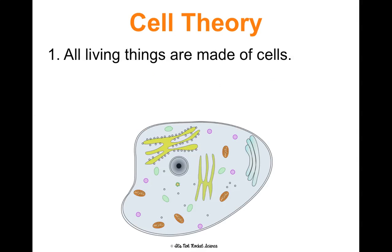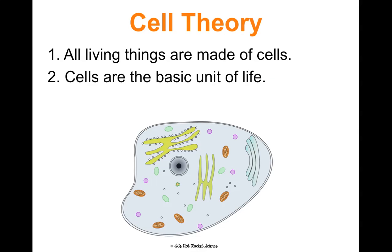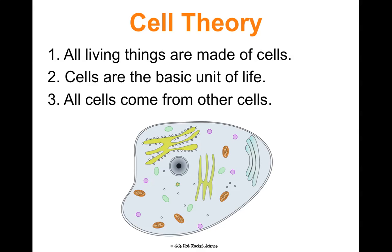The first principle is that all living things are made of cells. Second, cells are the most basic unit of life — there is nothing smaller than a cell that is considered alive, and cells work together to make up all living things. Third, all cells come from other cells, so to make more cells, we get those from previously existing cells. We're going to look at each of these three over the next few concepts.